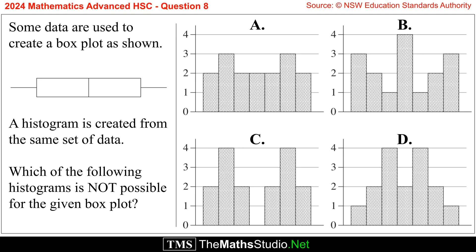Question 8. Some data are used to create a box plot as shown. A histogram is created from the same set of data. Which of the following histograms is not possible for the given box plot?